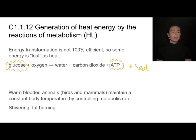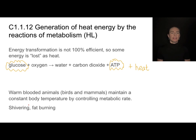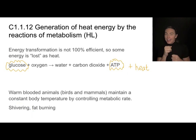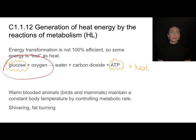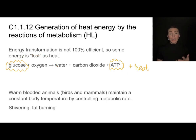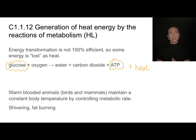Certain animals, like warm-blooded animals, can control their metabolic rate to control body temperature. That's why we shiver — we're making muscles move to generate ATP, which is really just a way of increasing the cell respiration process to produce heat. It's just not a usable form for powering other cell processes.